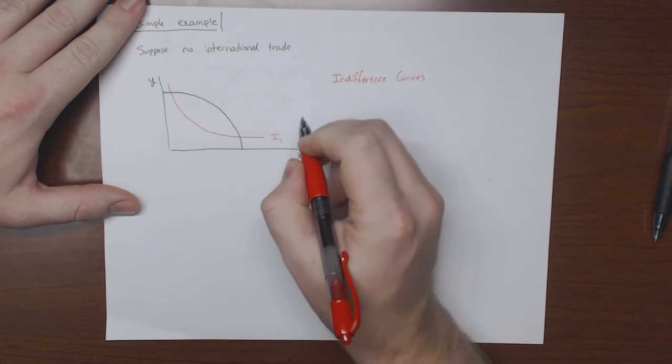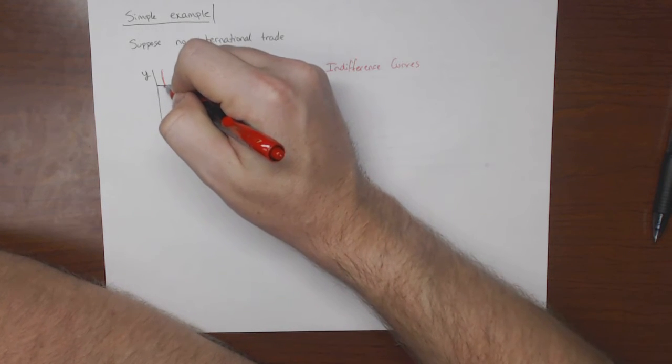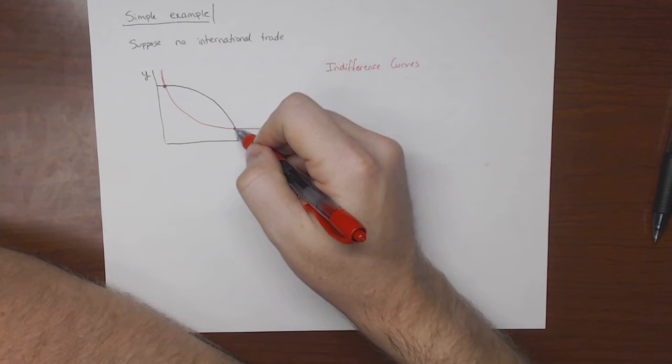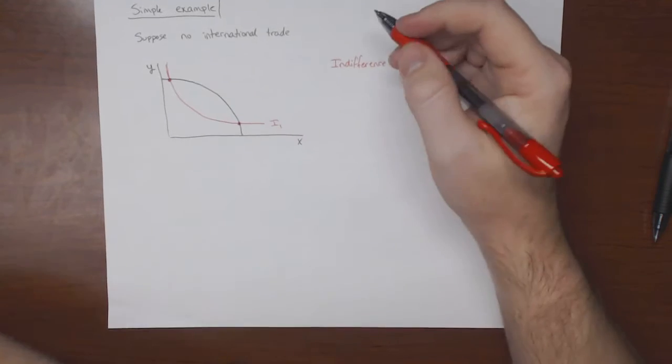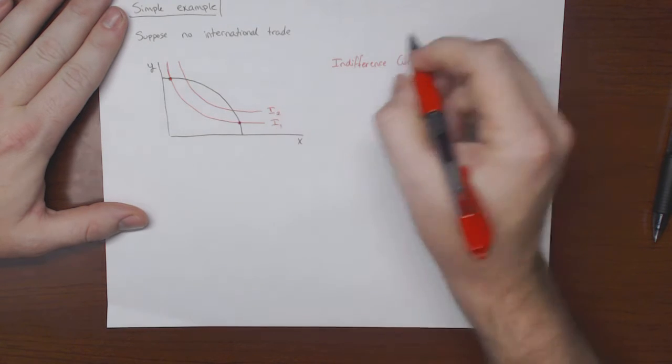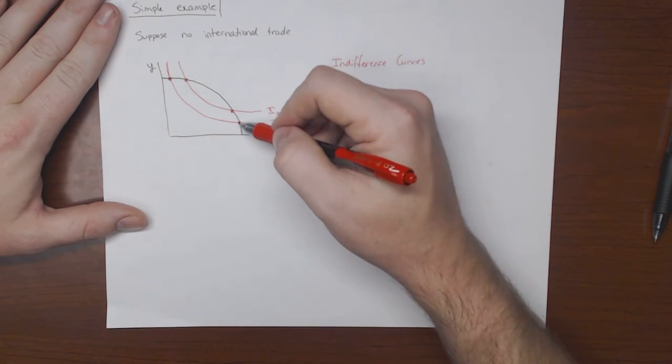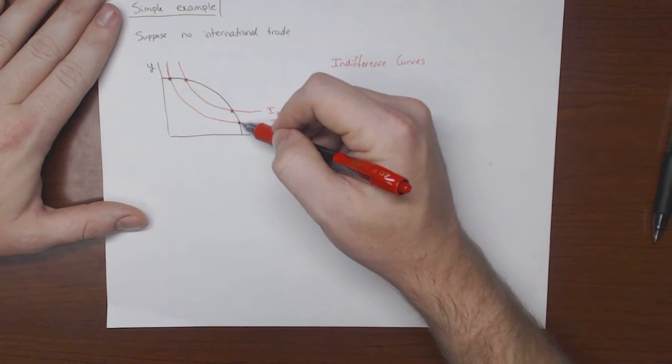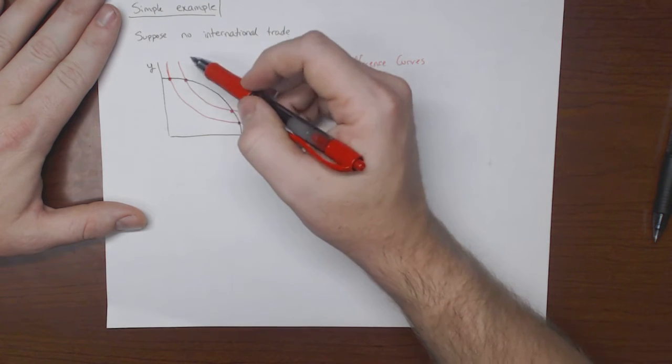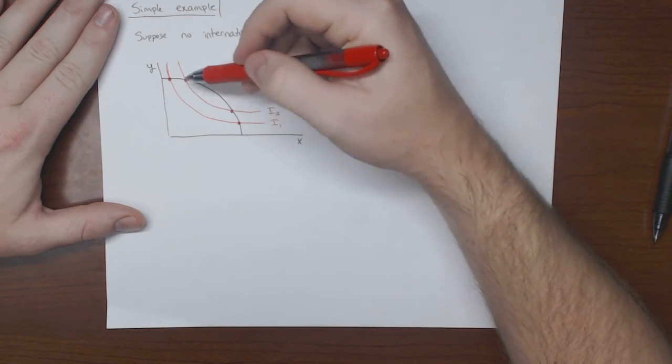So if we were here, what this indifference curve here says is that if we were at this point here, or this point here, we would be equally happy. So we're equally happy, we're indifferent between producing at this point and this point. But we could be made happier if we were, let's say, here. So if we were at this point, we'd be happier than we are at this point, because notice how this point here is on a higher indifference curve than this point. And the same is true between these two points. If we move from here to here, we would become happier. But again, we're still equally happy between these two points.